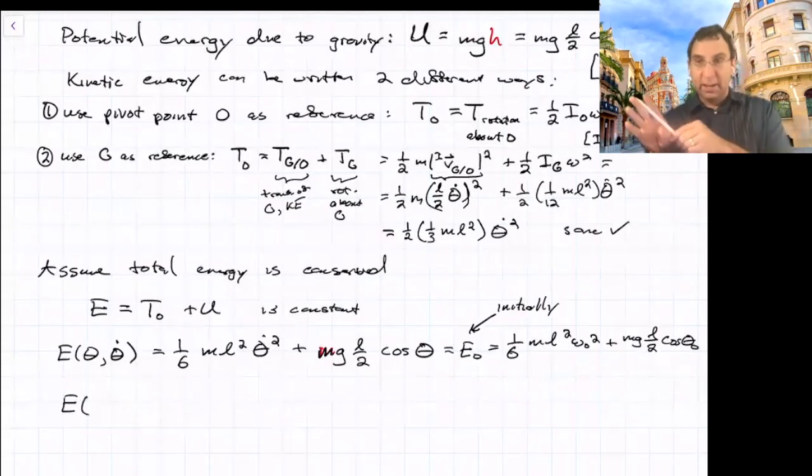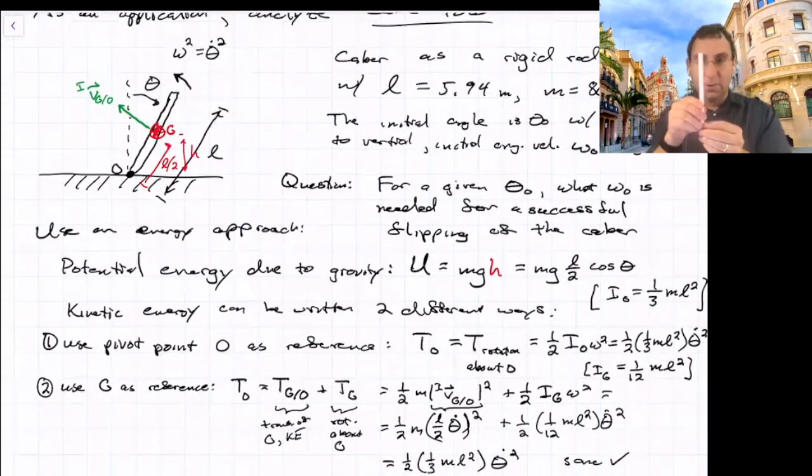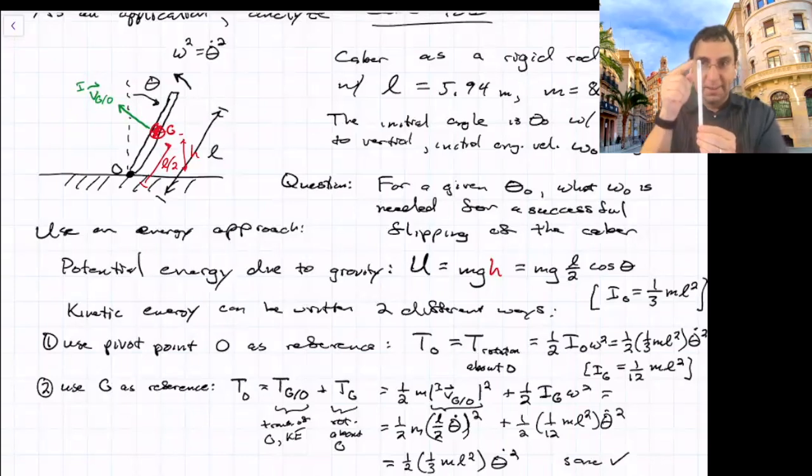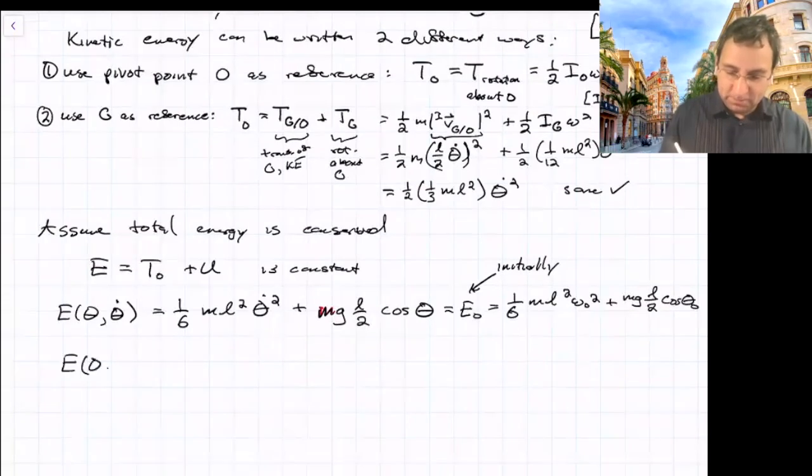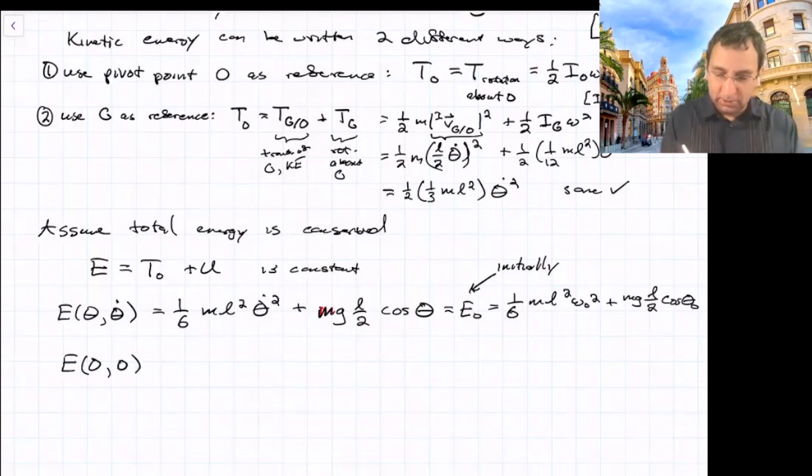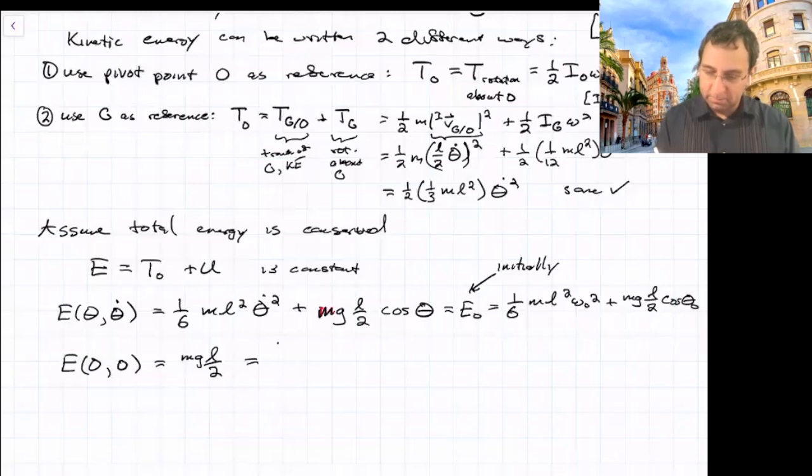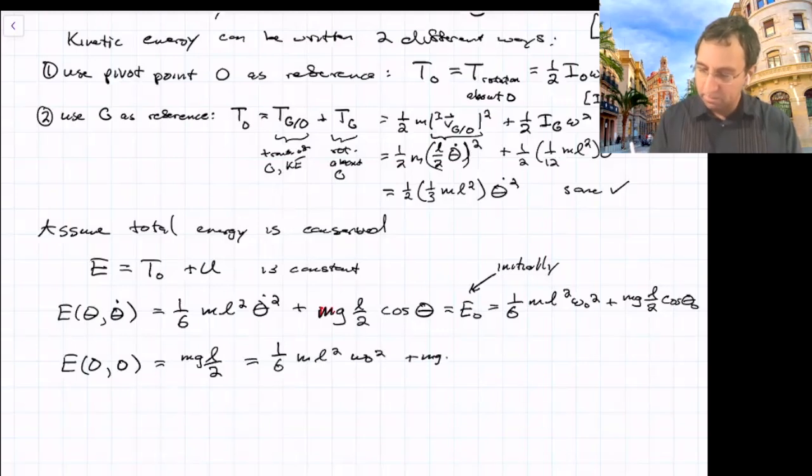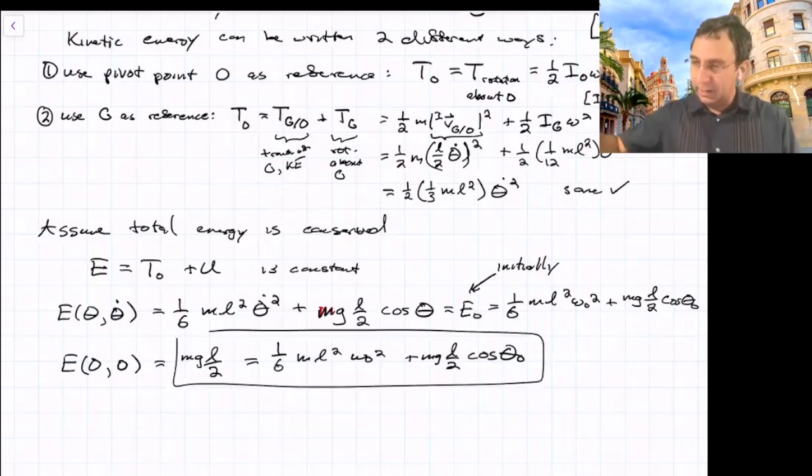And we'll say, what is this initially? Initially we're at one six M L squared omega naught squared plus M G L over two cosine theta naught. And we want to know, so when theta gets to go up here, when theta gets to zero, we want there to be just enough energy to go over. And so that's at zero and theta dot is just barely above zero, but we'll just substitute in zero. So energy zero, zero, this is just M G L over two. So we could set this equal to what it is initially. And then we could solve for omega naught.